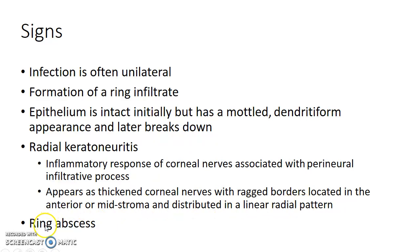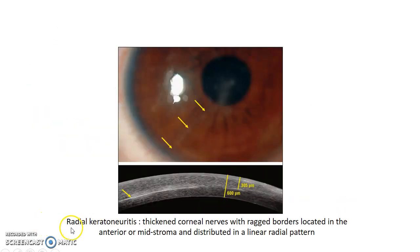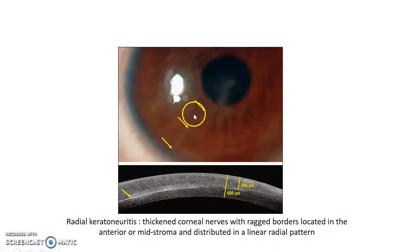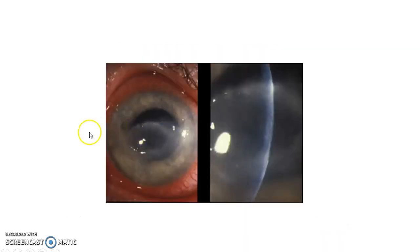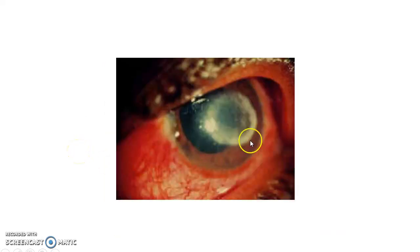Patients can also present with ring abscess. This picture shows radial keratoneuritis — thickened corneal nerves with ragged borders located in the anterior or mid stroma, distributed in a linear radial pattern. This picture shows a ring infiltrate, and this picture shows the formation of a ring abscess, both seen in Acanthamoeba keratitis patients.